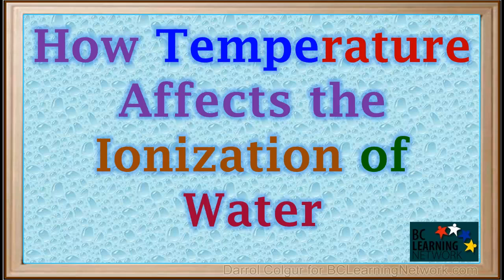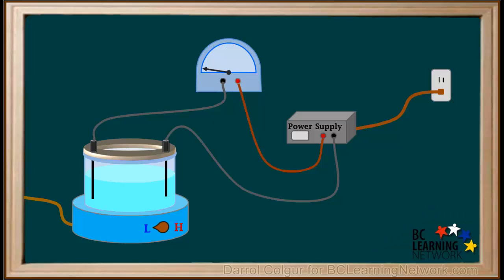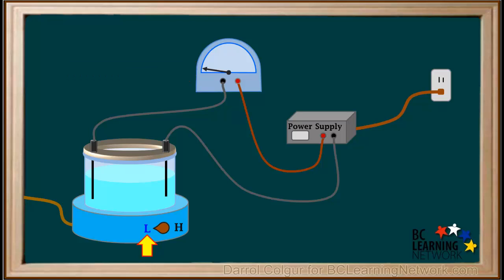Here, we'll examine how temperature affects the ionization of water. The conductivity of water can be measured with a very sensitive meter. At a low temperature, the conductivity of water is very low. But if we turn the hot plate on high, the temperature increases, and the conductivity of water also increases.